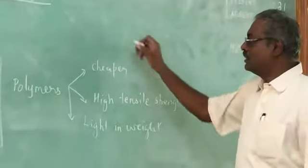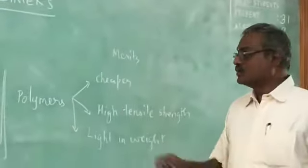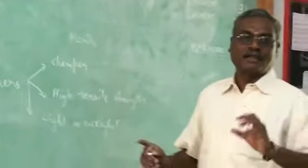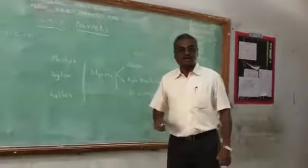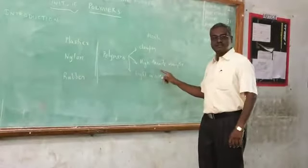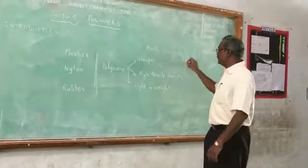So these are the three merits of polymers. First one is very cheaper compared to the cost of wooden furnitures and iron furnitures. Polymer is very cheaper and high tensile strength and light weight.